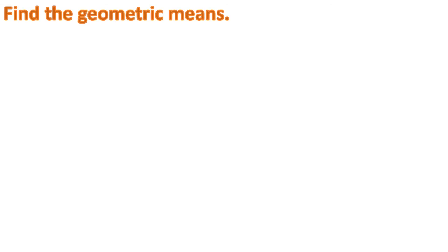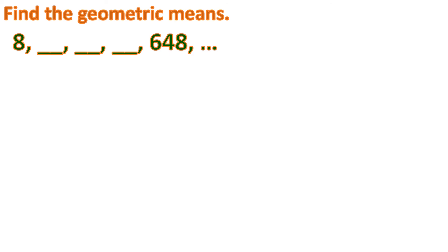Let's say we're tasked to find three geometric means missing between 8 and 648. Since these are geometric means, this is a geometric sequence with a common ratio. The challenge is to find that common ratio — once we know it, finding the geometric means is easy.